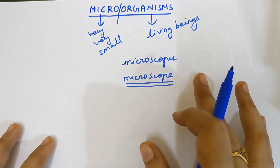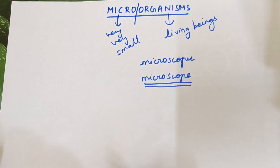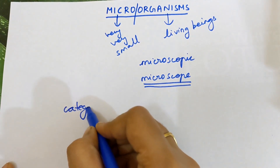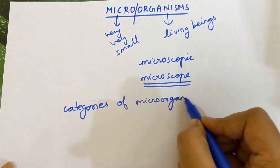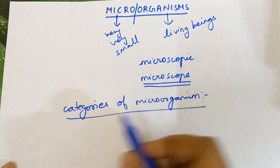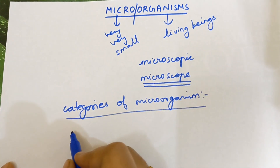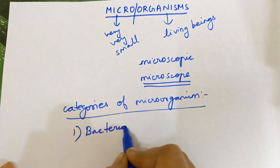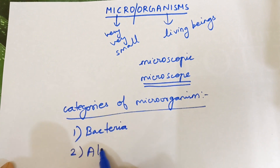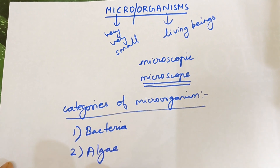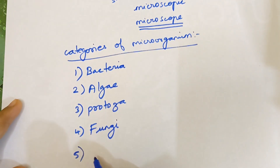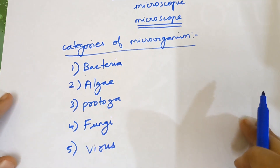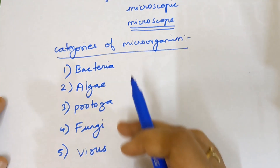Now we are going to see about the categories of micro-organisms. Totally there are five categories: the first one is bacteria, second one is algae, third one is protozoa, fourth one is fungi, and the last one is virus.